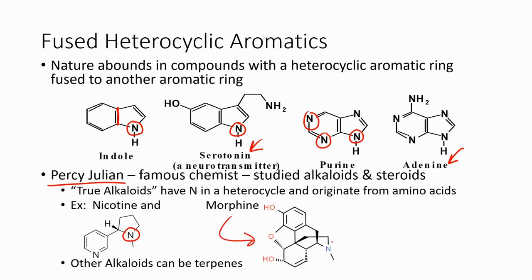True alkaloids have nitrogen in a heterocyclic ring and originate from amino acids. Examples include nicotine and morphine. Morphine might be hard to see as a heterocycle, but the nitrogen is part of its fused ring system — it contains a fused six-membered ring and another six-membered ring within the morphine structure. It's pretty complex, but it's a great example of these different heterocycles.